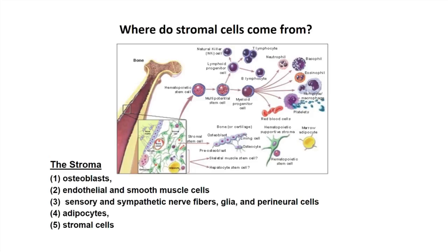The bone marrow also has innervation and adipocytes in addition to osteoblasts. It's generally thought that stromal cells give rise to both the adipocytes and the osteoblasts, providing a resident progenitor. Stromal cells also provide a very important niche for hematopoietic stem cells and orchestrate certain elements of hematopoietic differentiation.